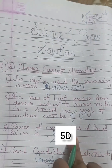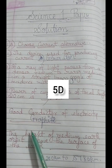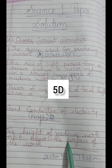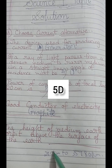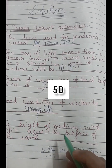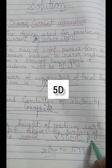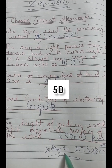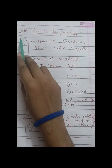So the MCQ answers: first is generator, second is zero degrees, third is 0.5D, and the good conductor is graphite. The last MCQ — the height of the medium Earth orbit above the surface of the Earth — in the textbook it is given as a range of about 2,000 km to 35,000 km, so the answer is mostly 25,000 km, though I'm not entirely sure.